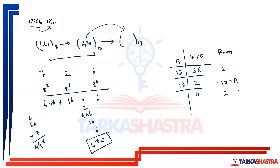So 2A2 is the base 13 equivalent of the octal number 726. This is not a very difficult concept. If you have understood these two methods, you can easily solve such questions. If you have any other queries, connect with us on the numbers given in the description of the video. Thank you so much.